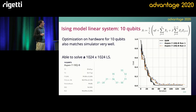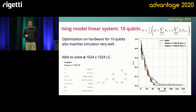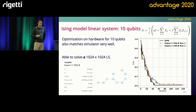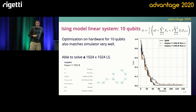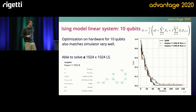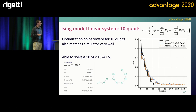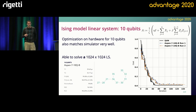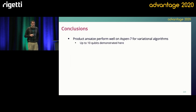We're able to bump this up to 10 qubits as well, and you could probably do more. This was sort of all the time and credits that I had, but you could easily scale this up — at least for this linear system with this matrix product state — to larger qubit counts.